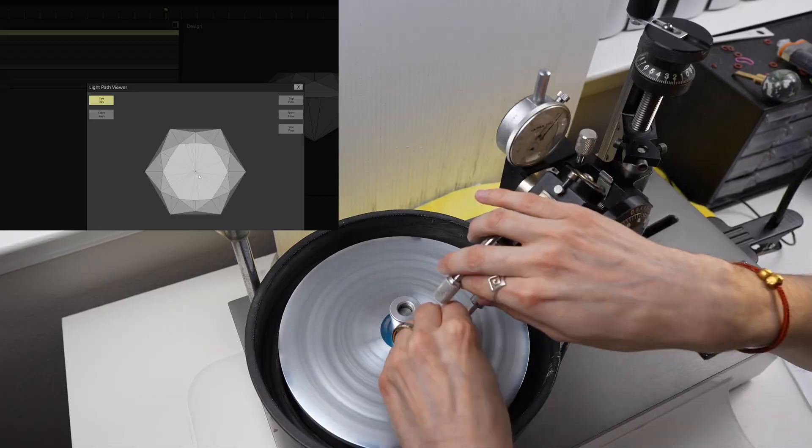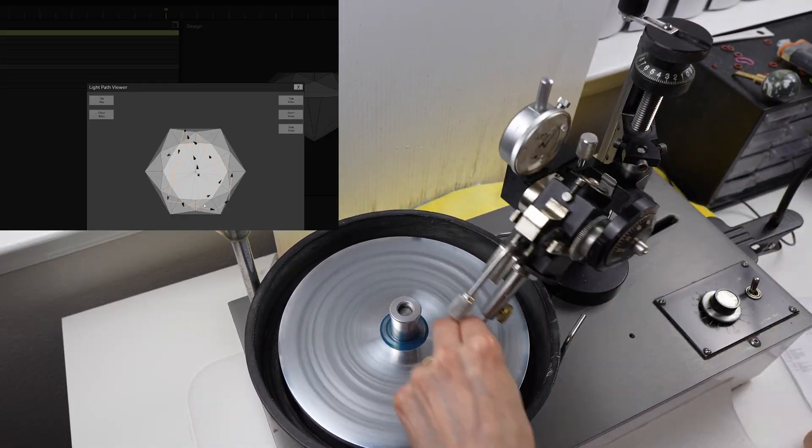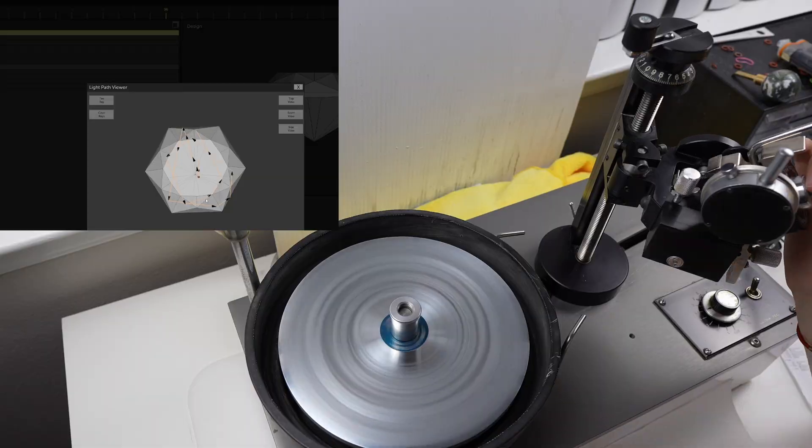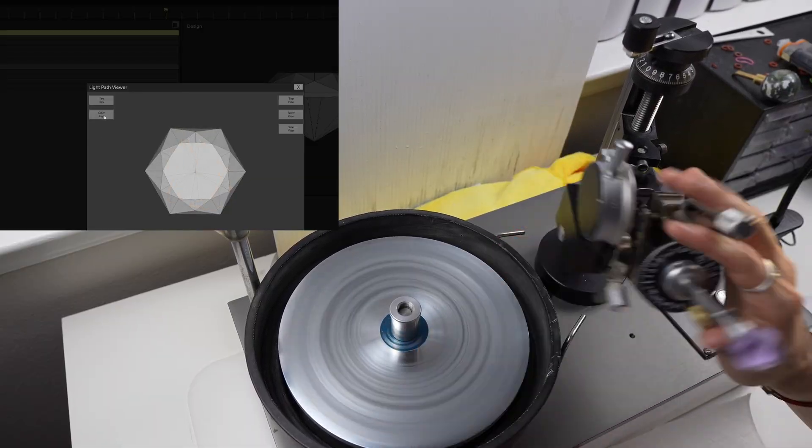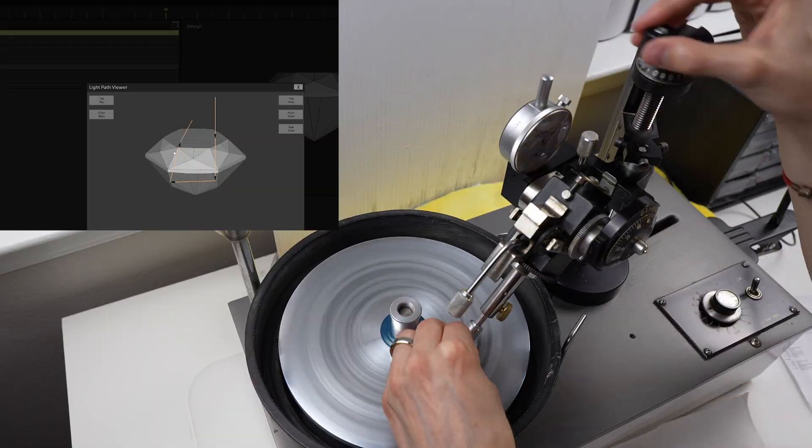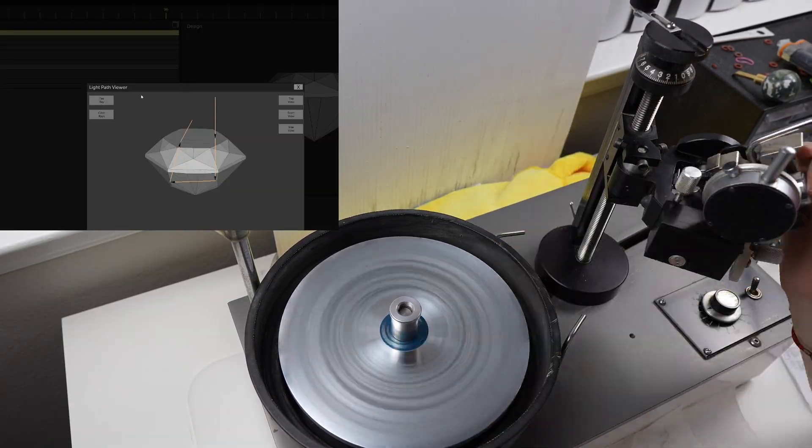I use a light path viewer tool to shoot a light beam inside the stone to see if the light bounces around inside the stone like you see here. A normal gemstone diagram just bounces light off the pavilion and exits to the crown, as seen by this light beam off of one of the non-crushed ice facets.